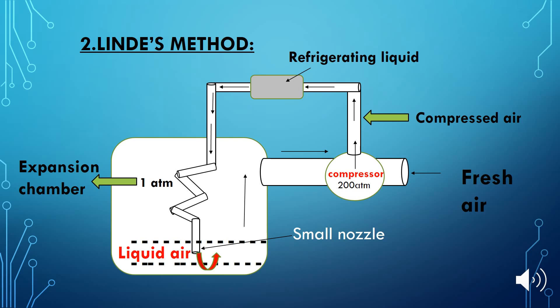As you can see in the diagram, fresh air enters the compressor where the gas is highly compressed at 200 atmospheres, then passes through a refrigerating liquid. The gas follows the pipes and comes out through a small nozzle to the expansion chamber, where the pressure is very low — one atmosphere — and the gas gets cooled. By repeating this process several times, the gas changes into the liquid state.